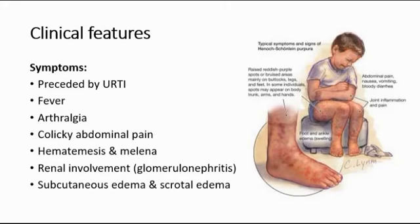There is also renal involvement — glomerulonephritis — in 80% of cases, where children present with hematuria (blood in the urine) and proteinuria. They also have subcutaneous edema and scrotal edema, presenting with scrotal swelling. These clinical features are usually preceded by a history of an upper respiratory tract infection a few weeks prior.